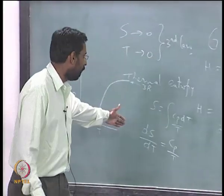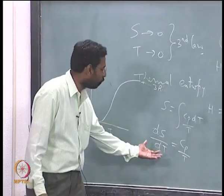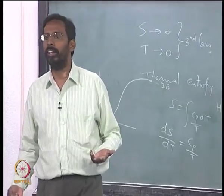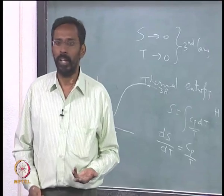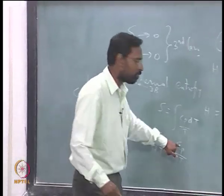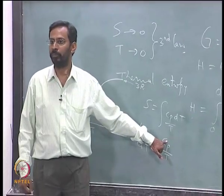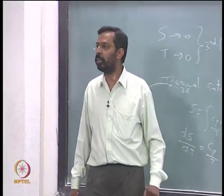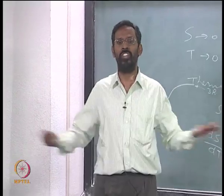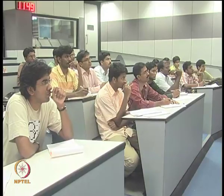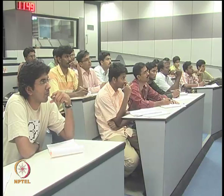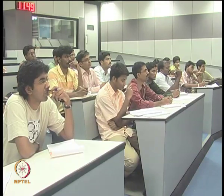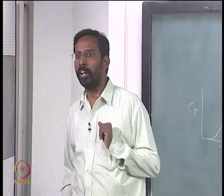When I say d s by d t, how does the entropy change as you increase the temperature? Is it positive? Is it negative? Or does it not change? If you look at it, if c p was 0, then we can say d s by d t is 0. D s by d t being 0 means entropy does not change with temperature. At any temperature, material will always have the same entropy. And again, I am talking in terms of the thermal entropy here. We have not yet come to configurational entropy.